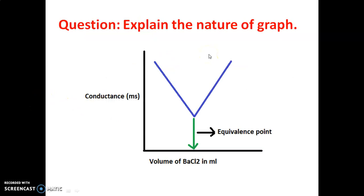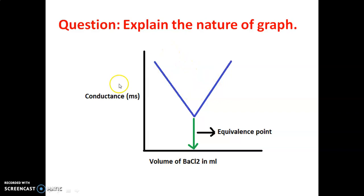Explain the nature of the graph. This is an important question. In this titration, we will get a V-shape graph. On the y-axis, we are taking conductance. On the x-axis, we are taking volume of barium chloride added in ml. Initially, the conductance is very high without addition of barium chloride.